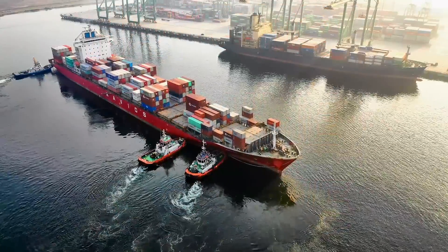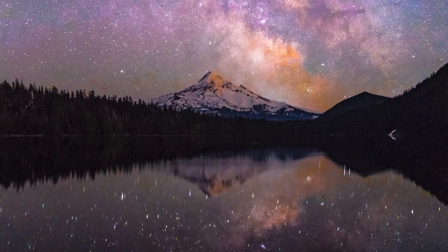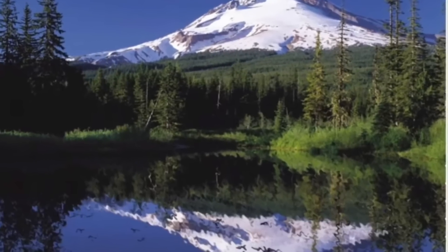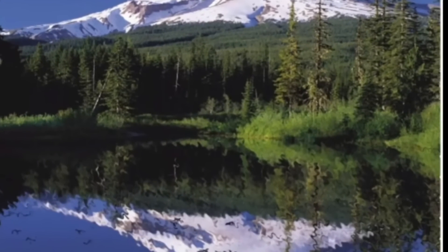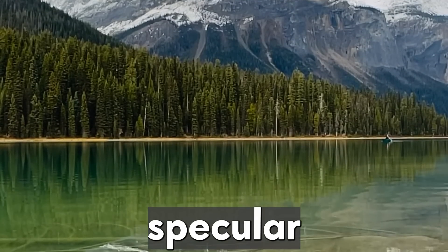We have specular reflections — observations from many dozens of miles away showing big mountains reflected off water. If the surface is not flat, you cannot get a specular reflection. If there's just a little disturbance in the water, the image is disrupted. If the water were bending convexly, you would get a diffused reflection — the light would scatter — and you wouldn't get an accurate specular reflection at all. In order to get a specular reflection, the surface from the object to the water to you must be flat. We have long-distance specular reflections all over the earth, demonstrating that the water is flat.